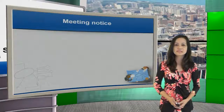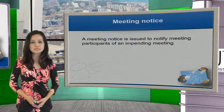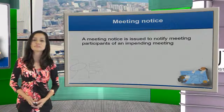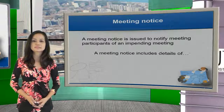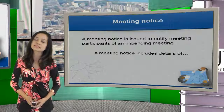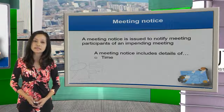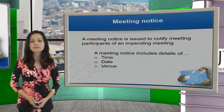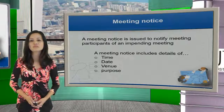Let's begin with the first one, the meeting notice. A meeting notice is issued to notify meeting participants of an impending meeting. For a meeting notice we usually include details such as time, date, venue, and the purpose of the meeting.